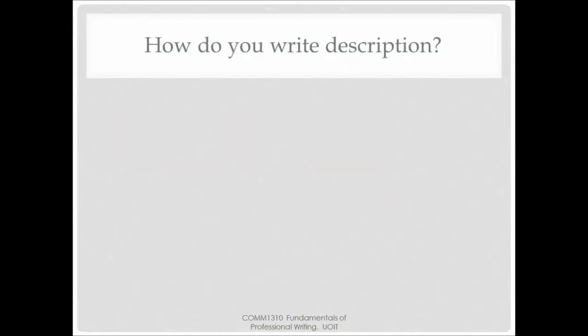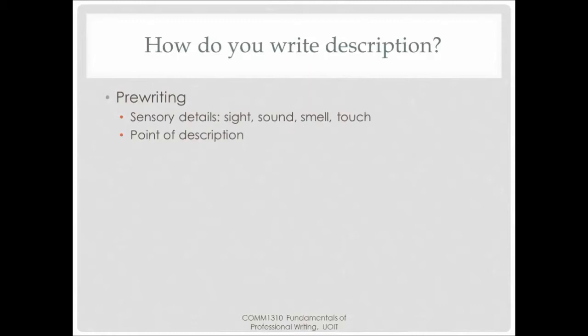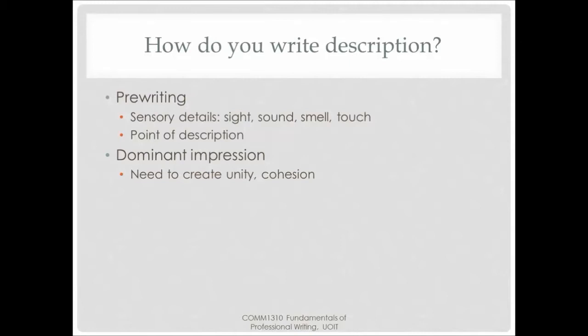How do you write a description? Start by pre-writing, jotting down the sensory details and the point of your description. Then think about your purpose and approach. One method is to create what's called a dominant impression — an overall image or idea that ties the details of a description together. A dominant impression is subjective, involving personal opinion. Professional writers often take a common object and use it in an uncommon or unusual way to create a dominant impression, perhaps comparing it with a simile, metaphor, or a symbol.